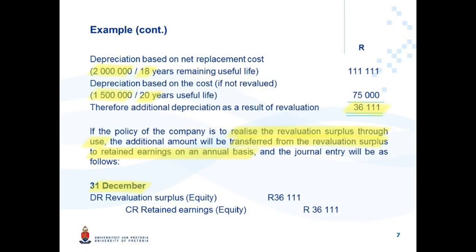The journal entry is: debit revaluation surplus and credit retained earnings. You reduce the surplus and increase retained earnings. Very importantly, both these entries happen directly in equity — not through profit or loss, not through OCI. The amount is 36,111. This will happen annually as long as the entity has a surplus regarding this asset. The moment you move into a net deficit situation, no such entry will be required.